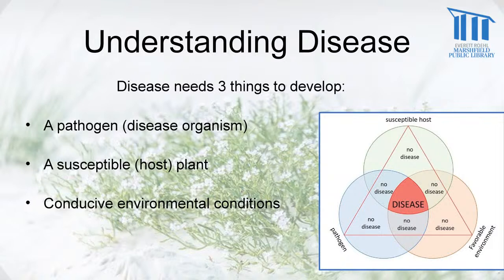If you look at this triangle, the green circle represents a susceptible host, the blue circle is the pathogen or disease organism, and the yellowish shaded circle is a favorable environment. If you only have two of those things, you have no disease. However, where they overlap and you have all three occurring at the same time, that's when a plant will develop a disease.